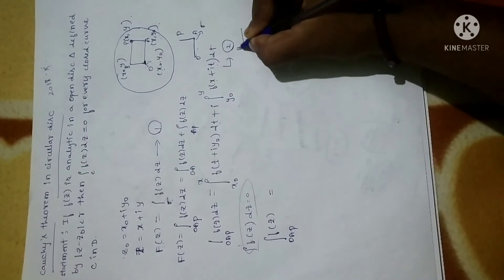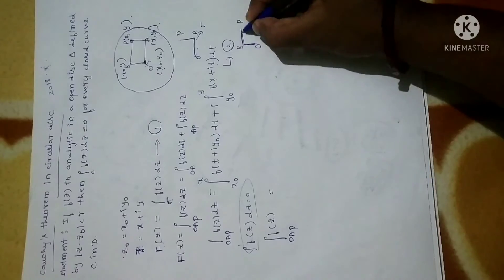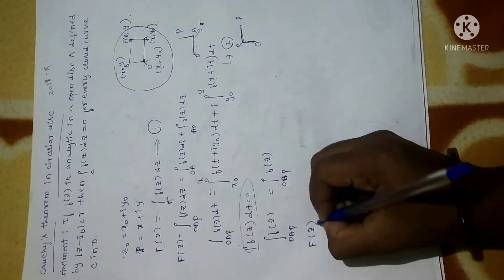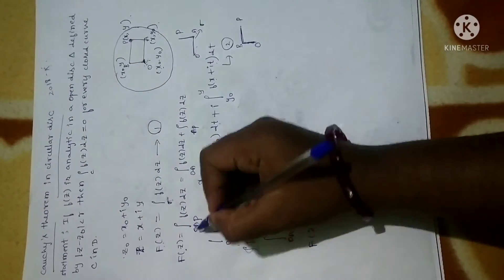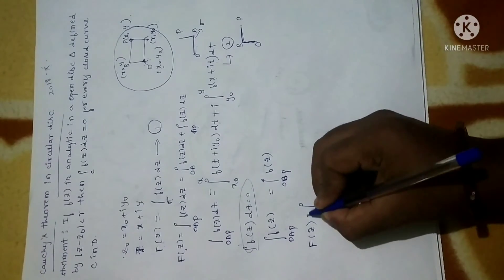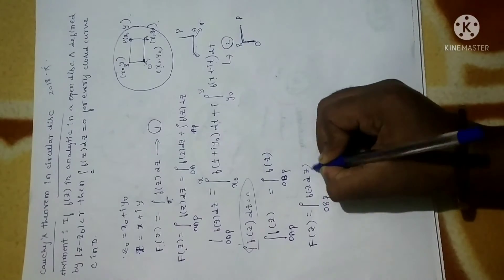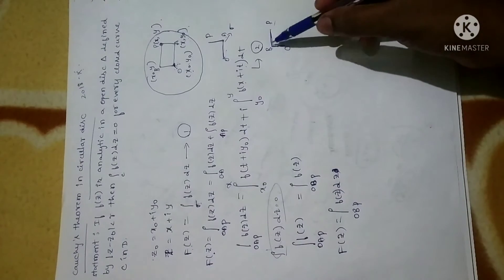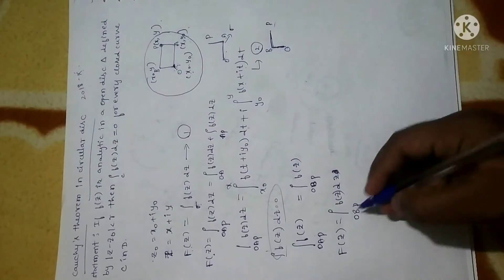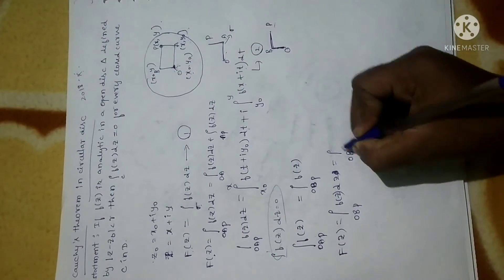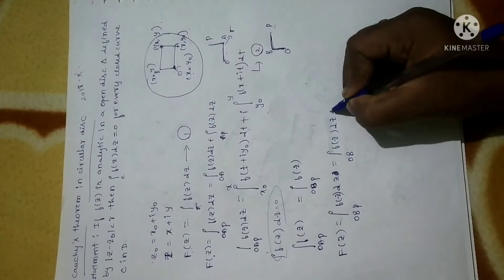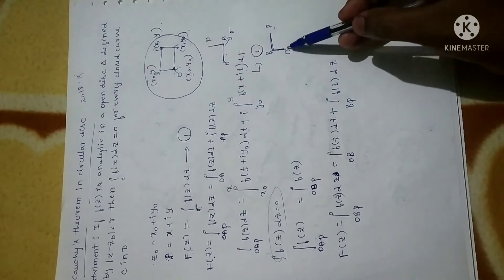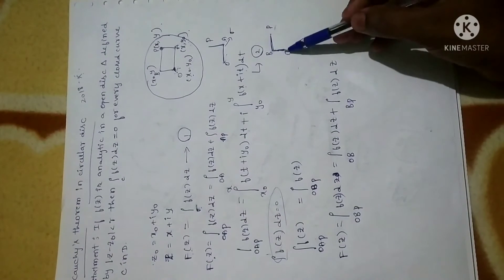O is one point, B is here, and P is here. The first segment is OA and the second is AP. So we can write the integral along OAP as the integral along OBP of f(z). Whatever we did for OAP, we now repeat for OBP: ∫(OBP) f(z) dz.